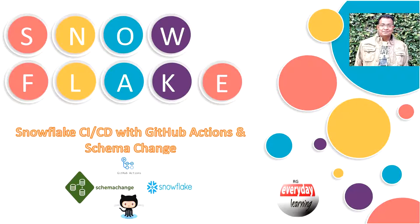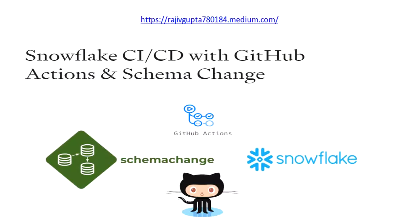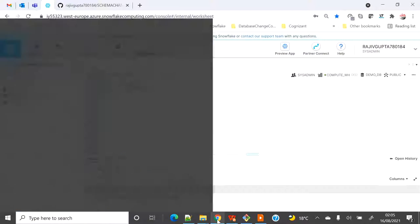Hi friends, today I will demo how we can set up a CI/CD pipeline for Snowflake using GitHub as a repo, GitHub Actions as the pipeline setup, and schemachange for schema changes in Snowflake. If you have not looked into my recent blog on Snowflake CI/CD with GitHub Actions and schemachange, I would suggest you please have a look there — I have captured more details.